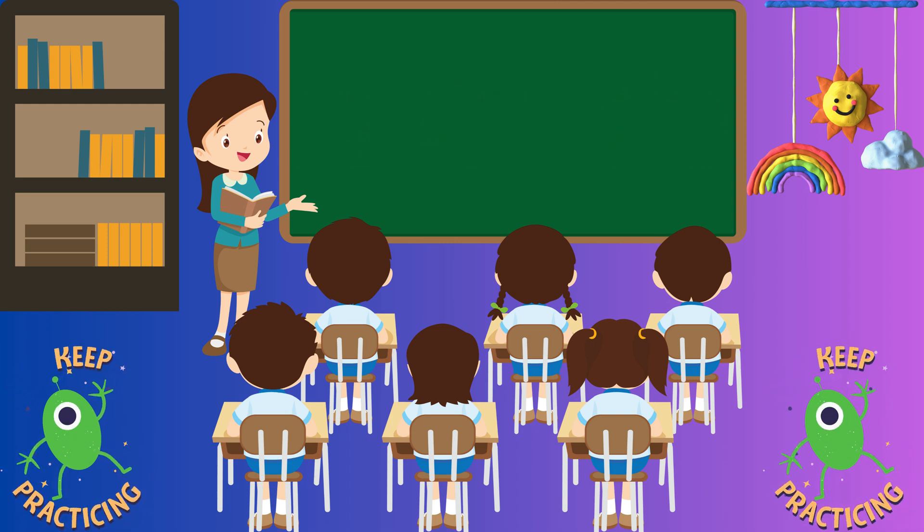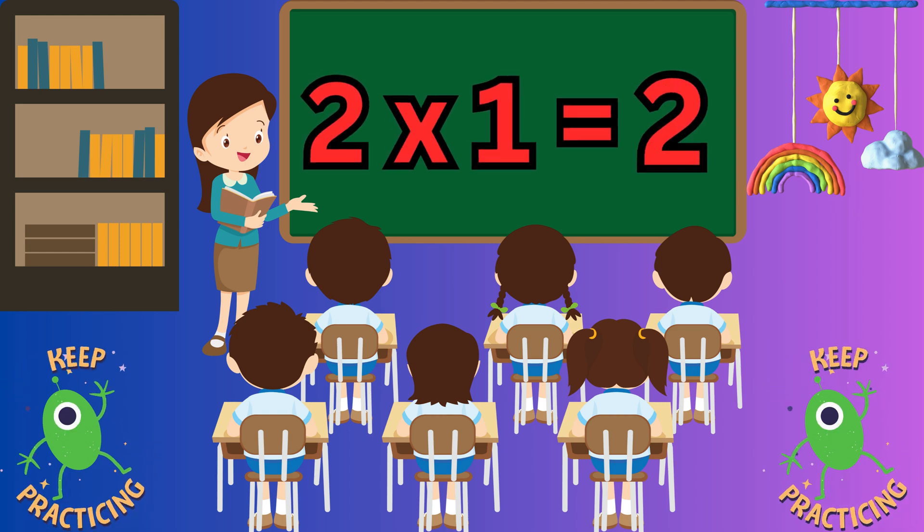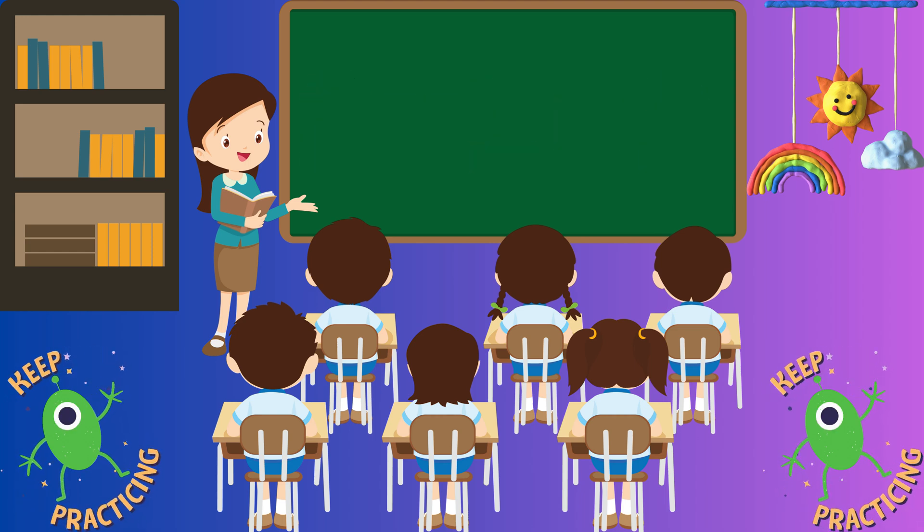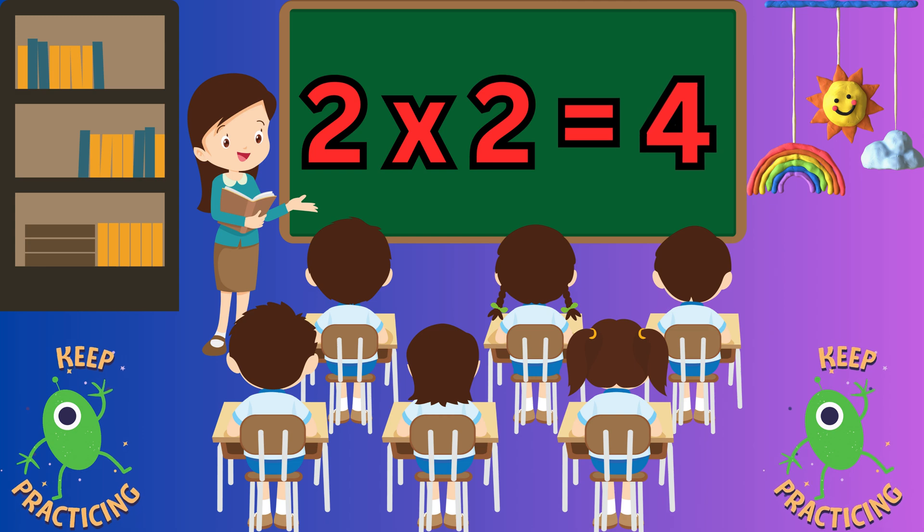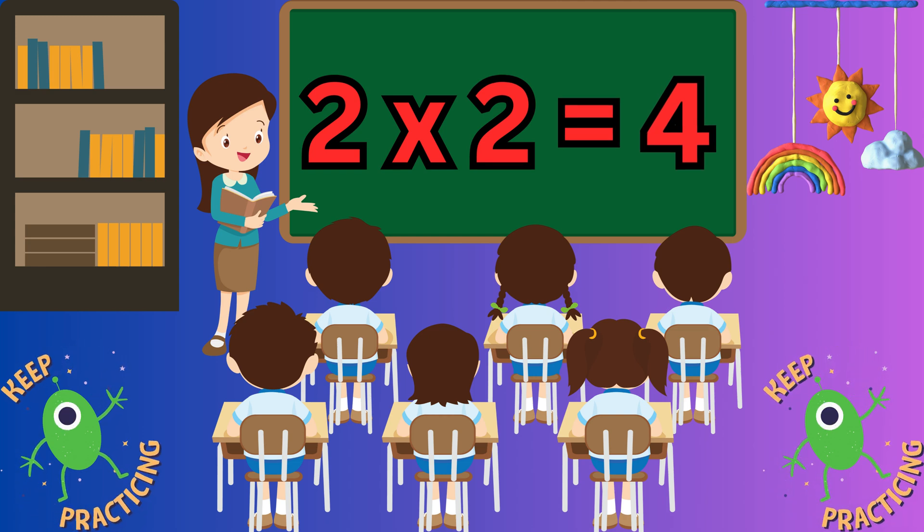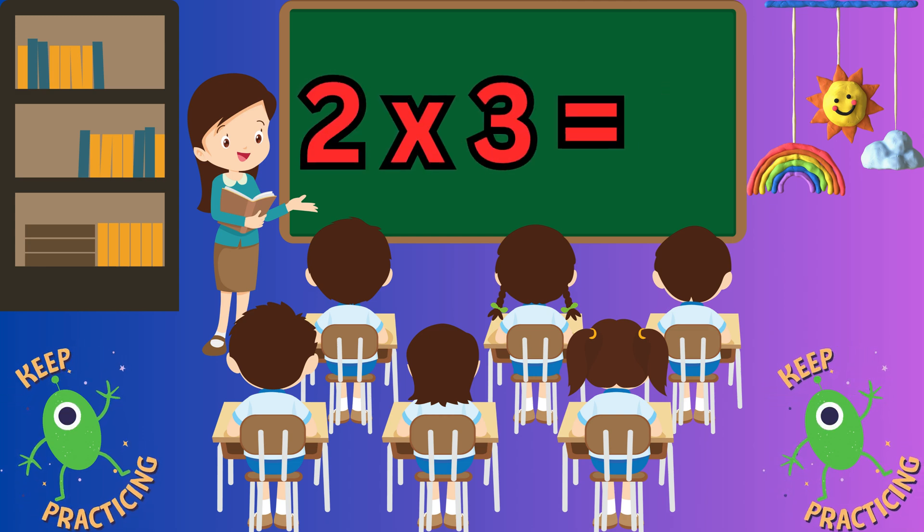Two ones are two. Two twos are four. Two twos are four. Two threes are six.